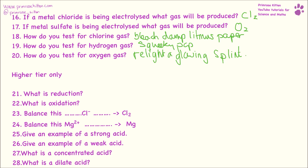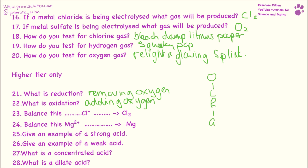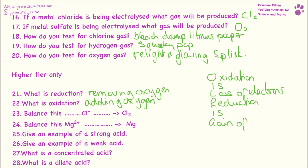Last few questions for higher tier only. Reduction is removing oxygen and oxidation is adding oxygen. But in terms of electrons we have OIL RIG — oxidation is loss of electrons and reduction is gain of electrons.